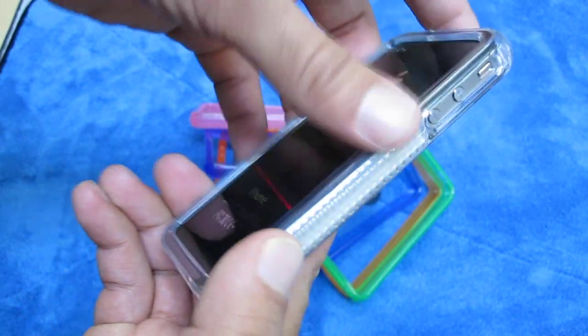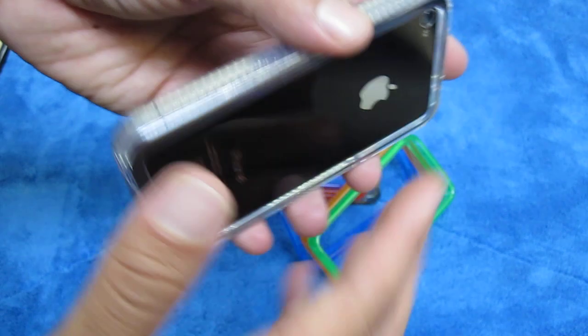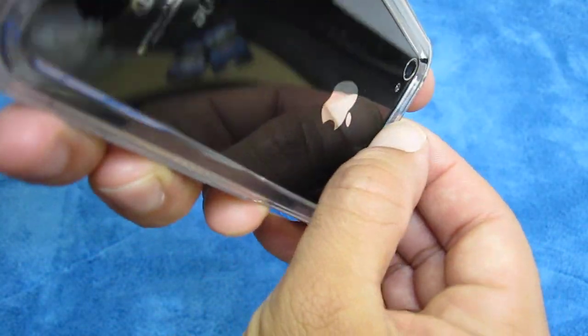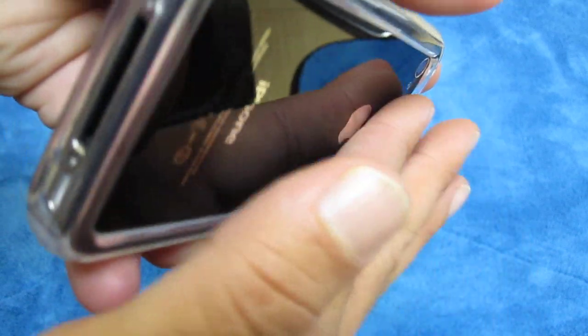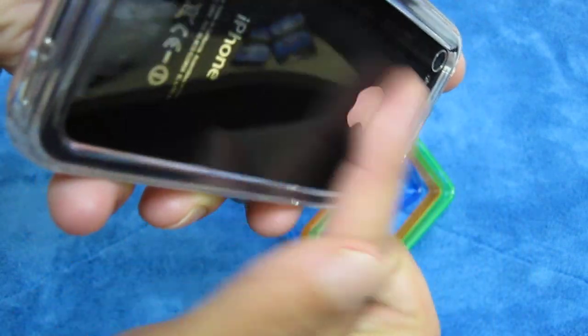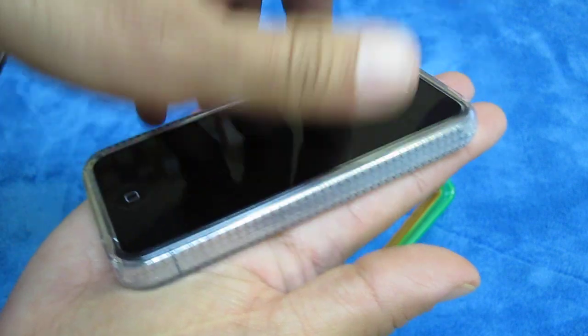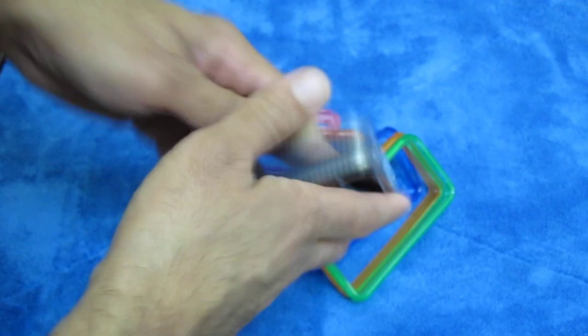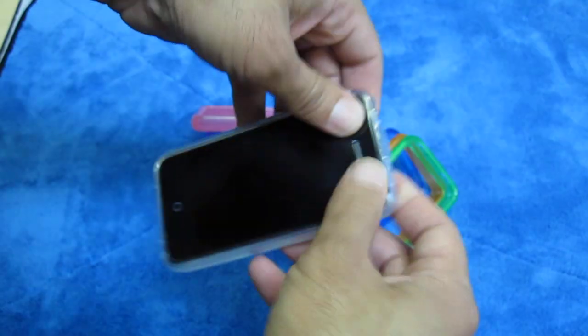It basically protects the sides and also protects the back even though the back is open. If you put it on a flat surface, the lip part is raised so it's not completely flat to the iPhone's back. So when you place it down on a flat surface, it'll actually lift over and protect the back part of it.